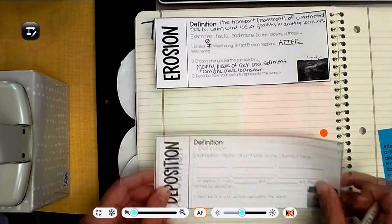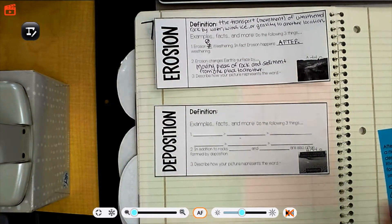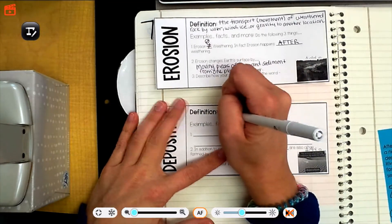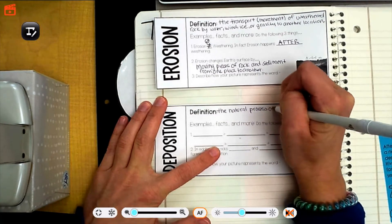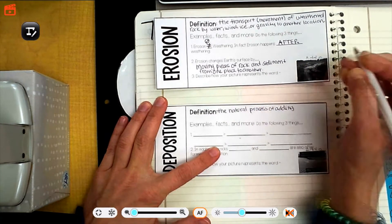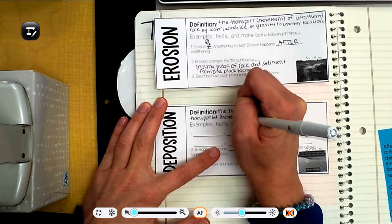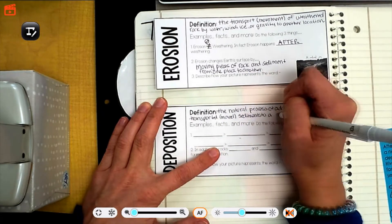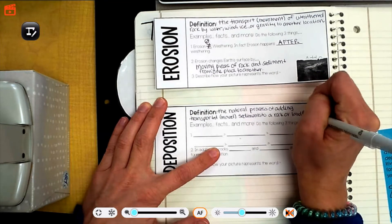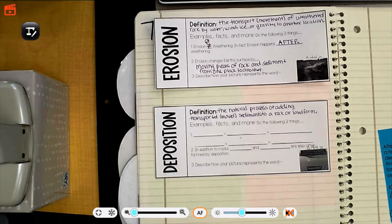We're going to do the word deposition. Next. The definition of deposition, which has the word deposit in it. So deposit is like to put something in somewhere. So deposition is the natural process of adding transported, remember that just means moved, transported, moved sediments to a rock or landform. So that's either we're building a new sedimentary rock or we're building something that's made out of sedimentary rock, like a mountain or a hillside or a river valley. So making a new feature on earth's surface.